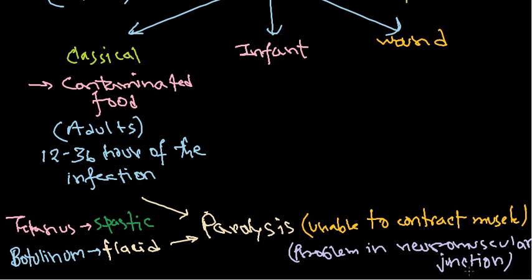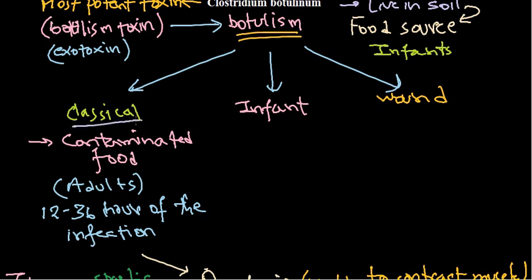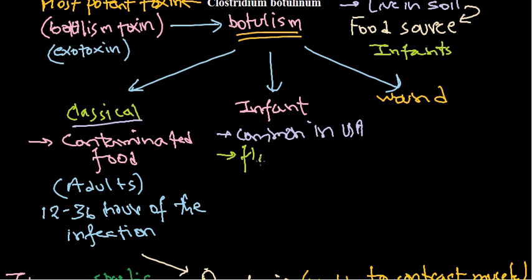The exact problem encountered by the host body when subjected to this Clostridium toxin will be discussed in the pathogenesis section. Classical botulism is the most common type. The second type is infant botulism, which is now very common in the United States — in fact it is the most common form in the USA. The result of this kind of botulism is also called floppy baby syndrome.